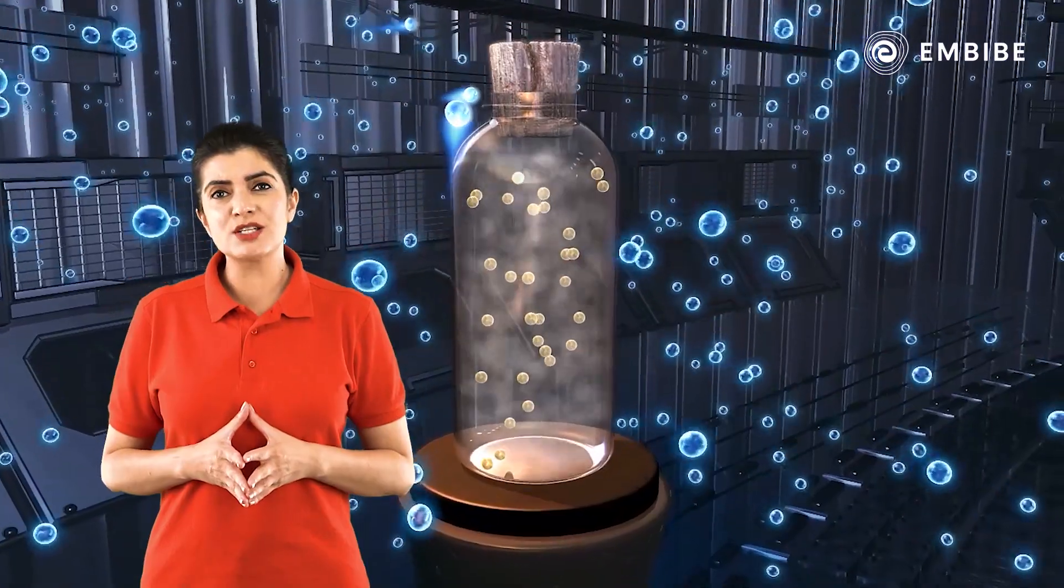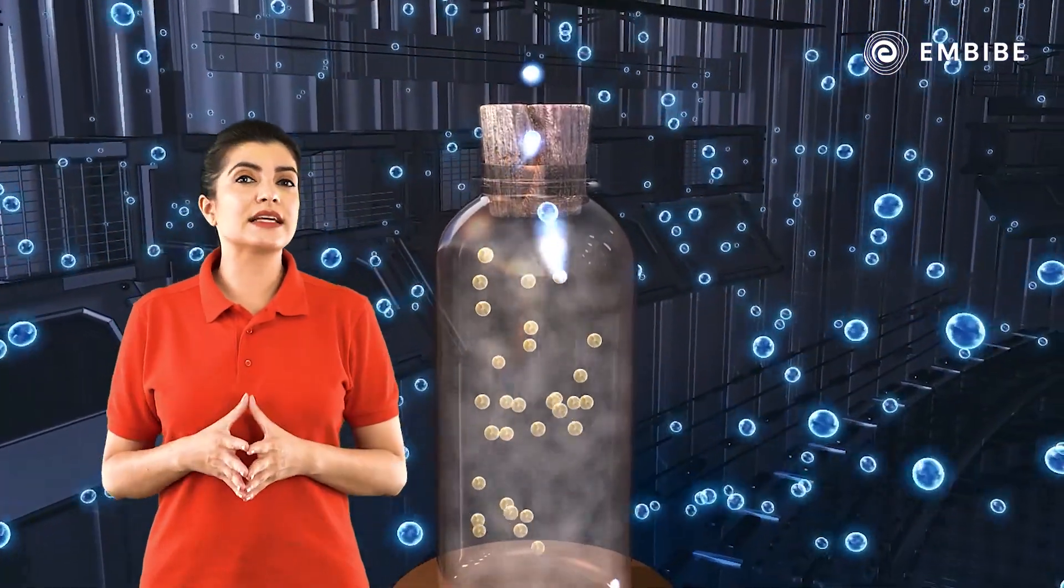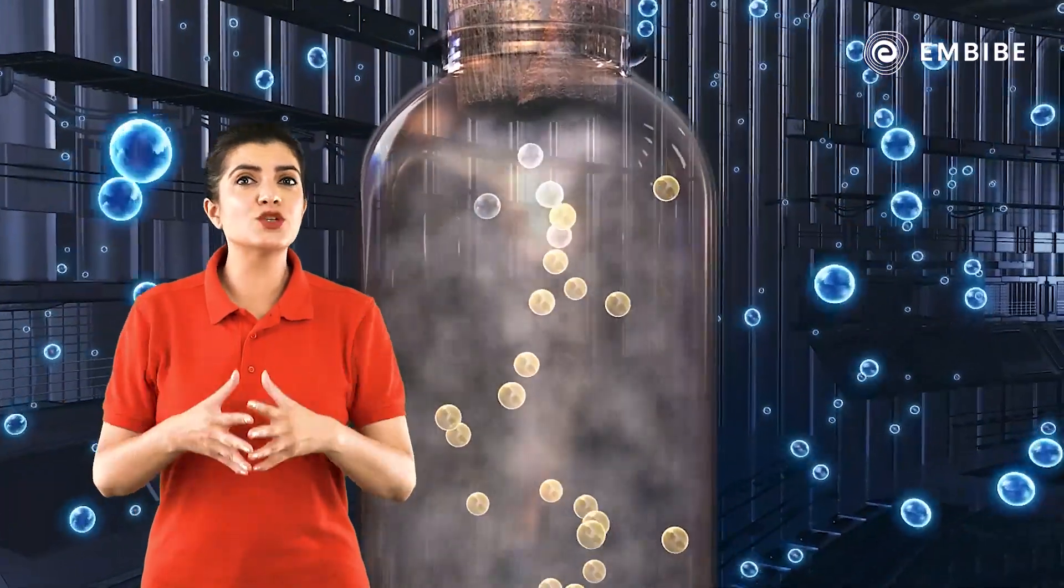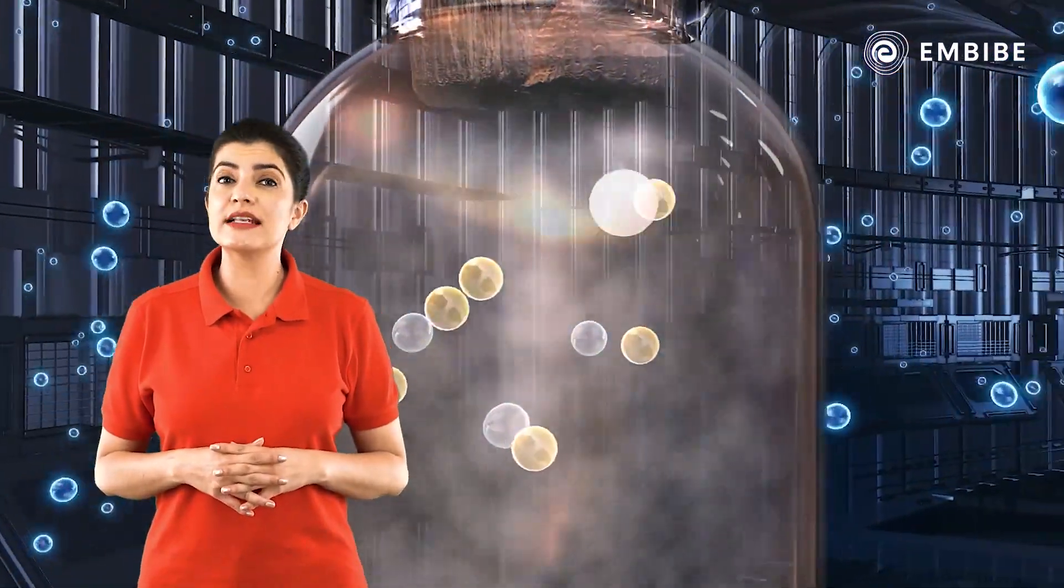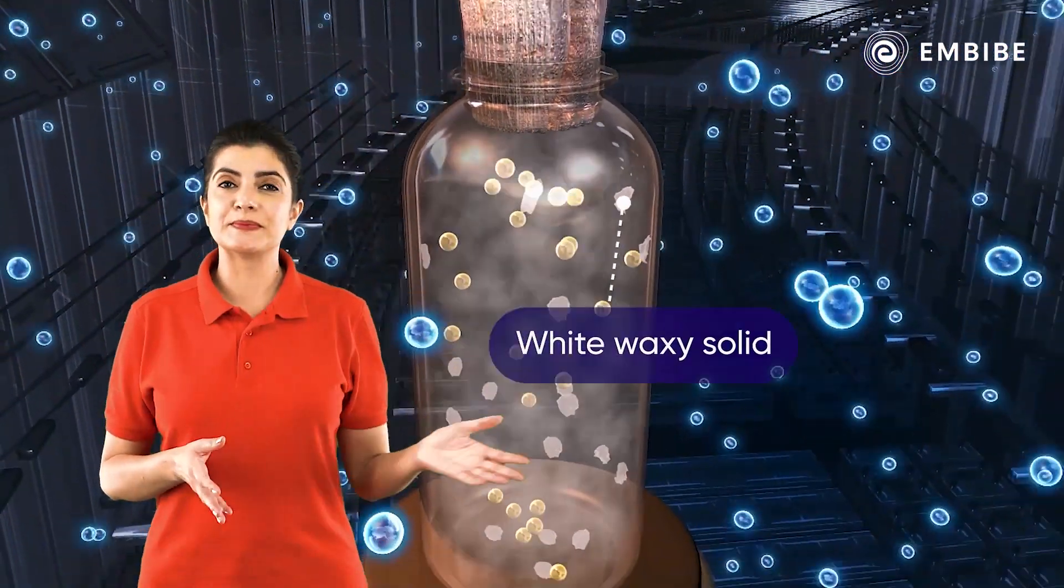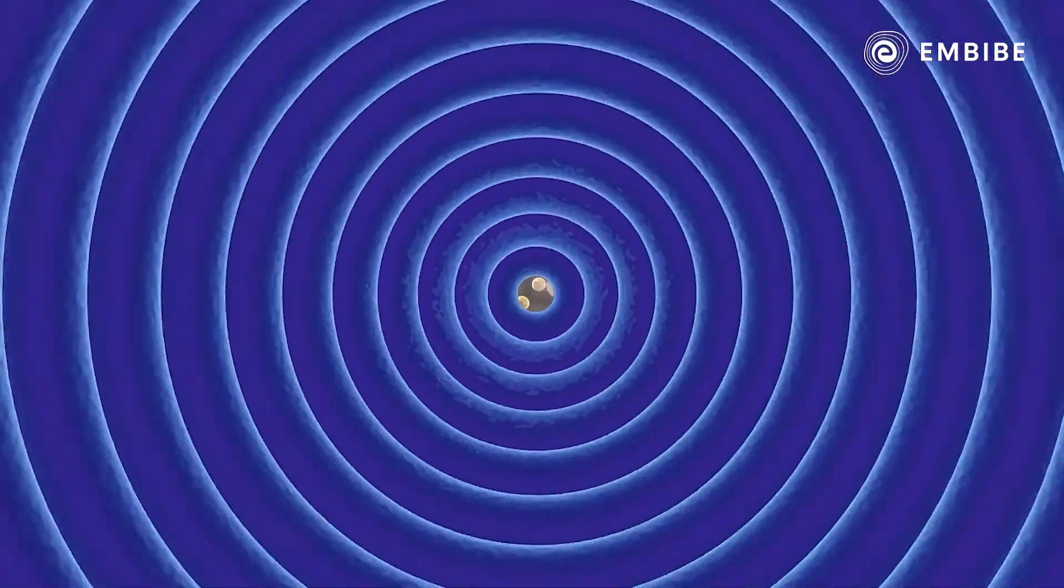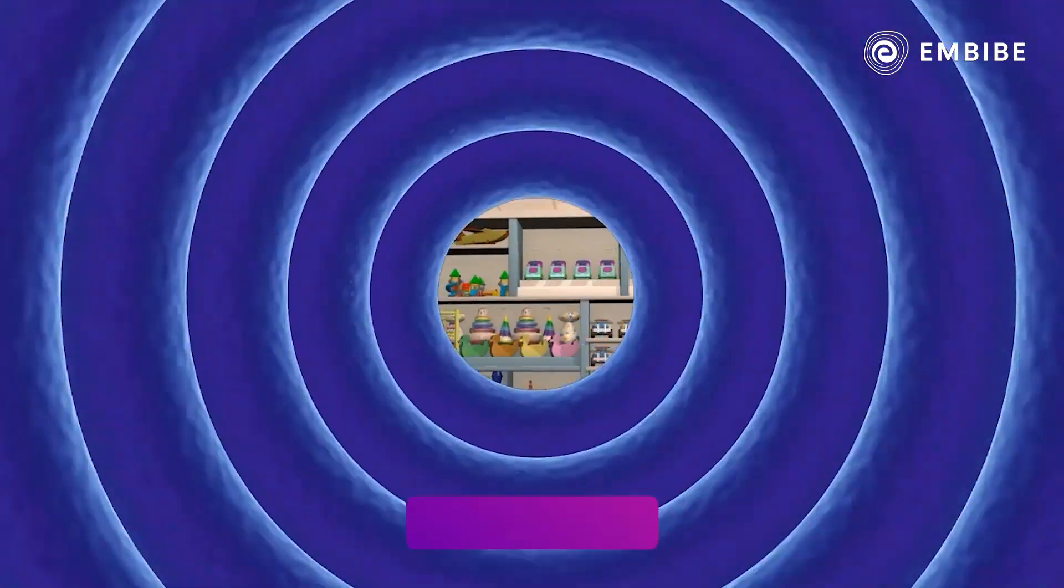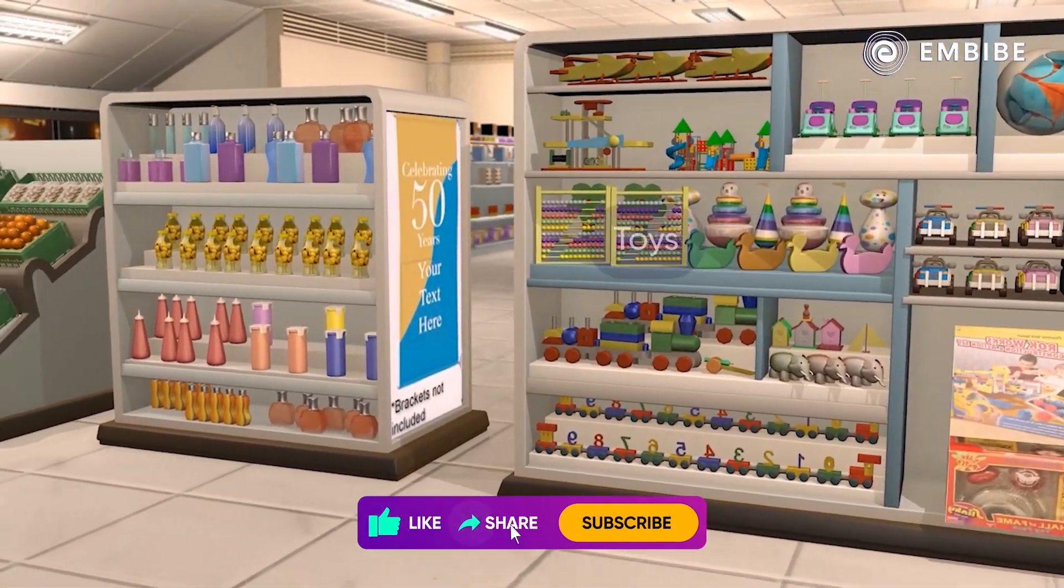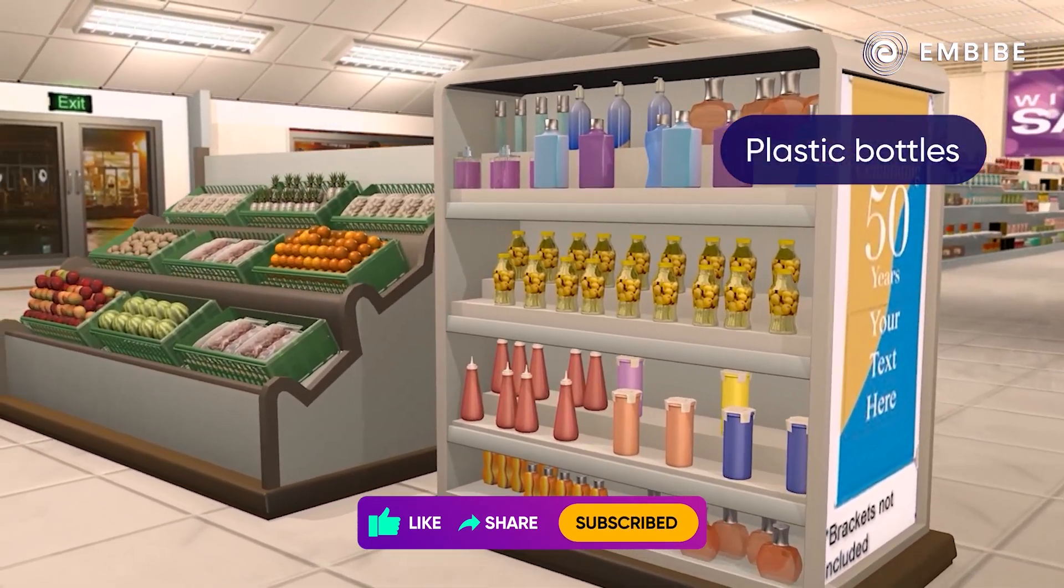You will be surprised to know that polythene was discovered accidentally when some oxygen gas leaked into a container of ethene, resulting in the formation of a white waxy solid. Today, polythene finds multiple applications ranging from toys, plastic bottles, cling films, grocery bags, insulating cables, and even bulletproof vests.